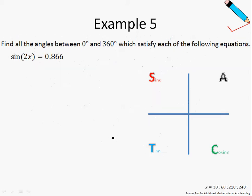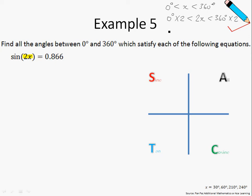Let's move on to example 5. We are asked to find all angles between 0 degrees and 360 degrees which satisfy each of the following equations. The range of x is between 0 and 360 degrees, so we need to first work out the range of 2x, because we are given that sine of 2x equals 0.866. Multiplying the whole inequality by 2, we get that 2x is between 0 degrees and 720 degrees. This means we will have to go two cycles around the ASTC diagram.